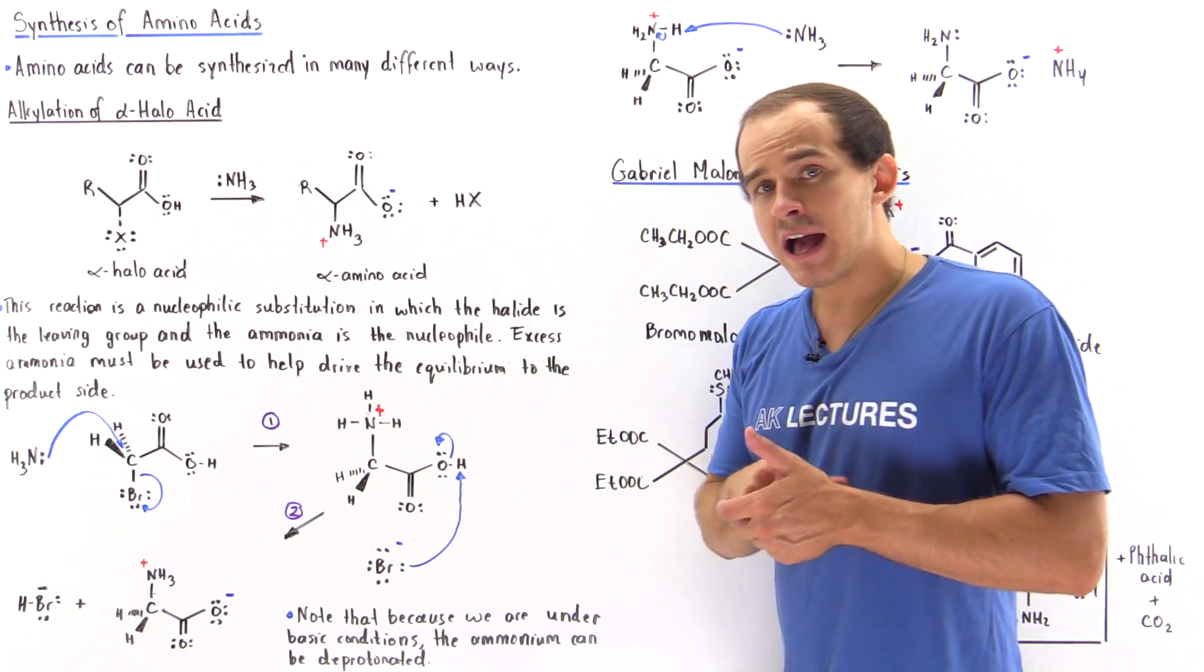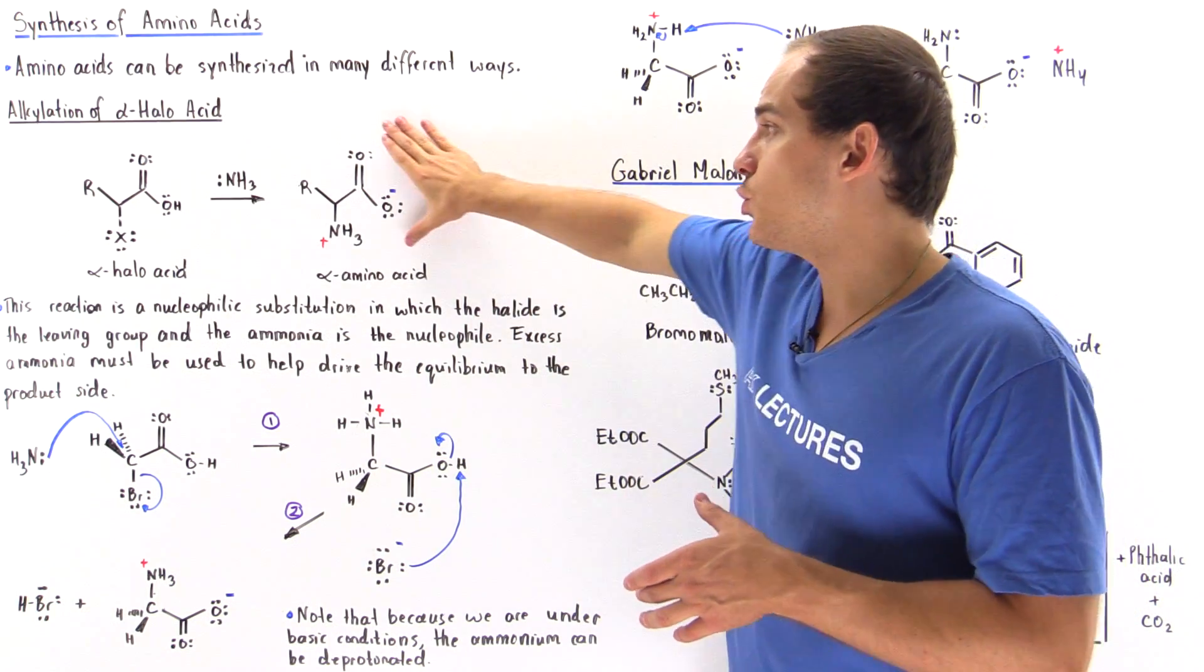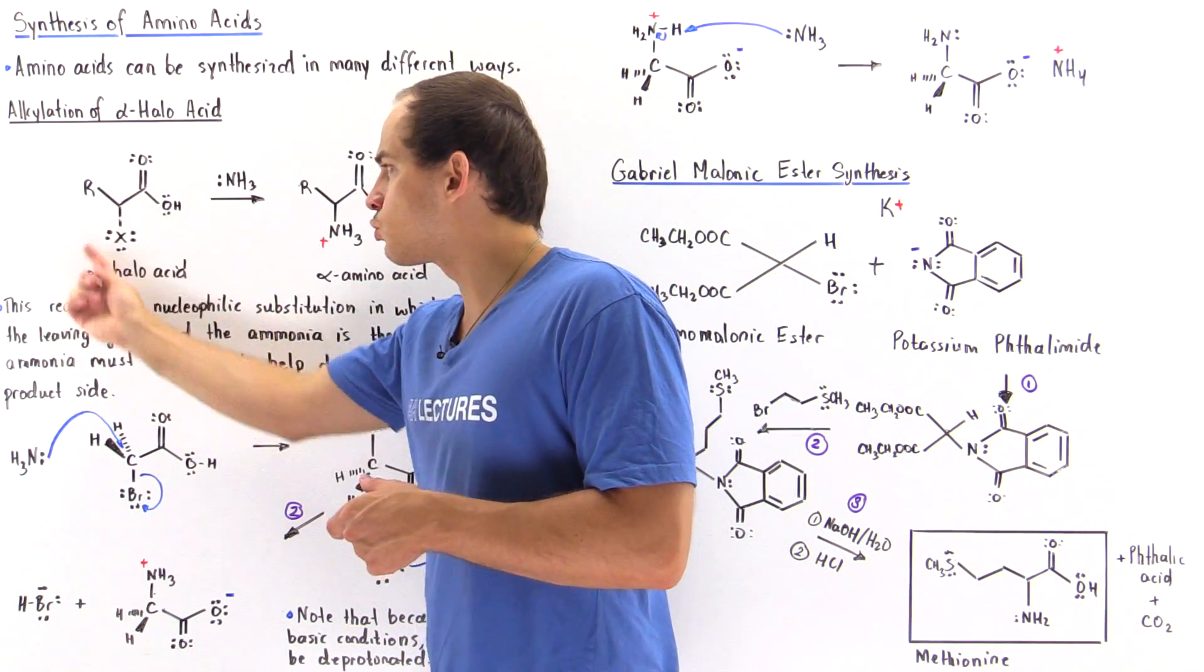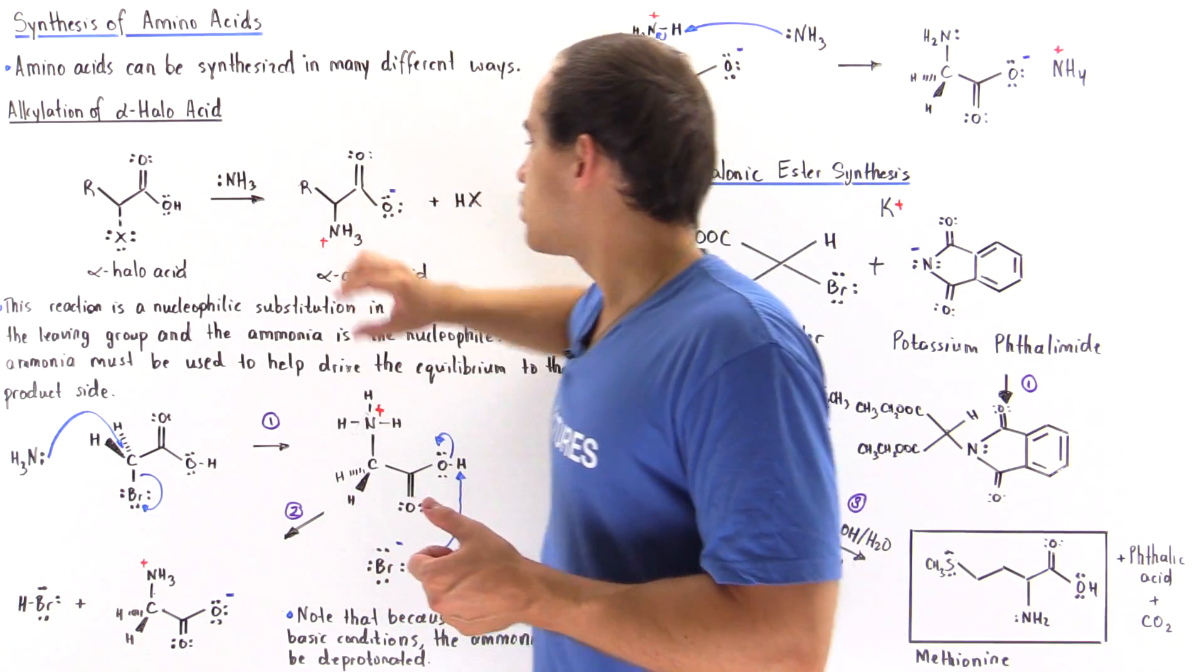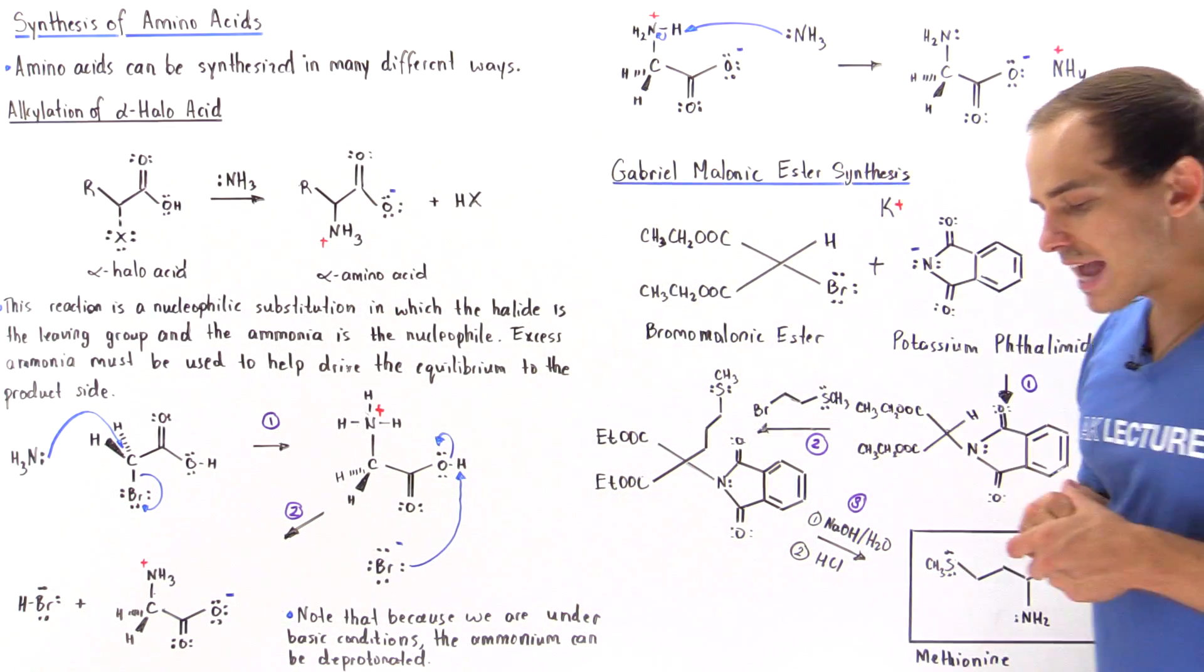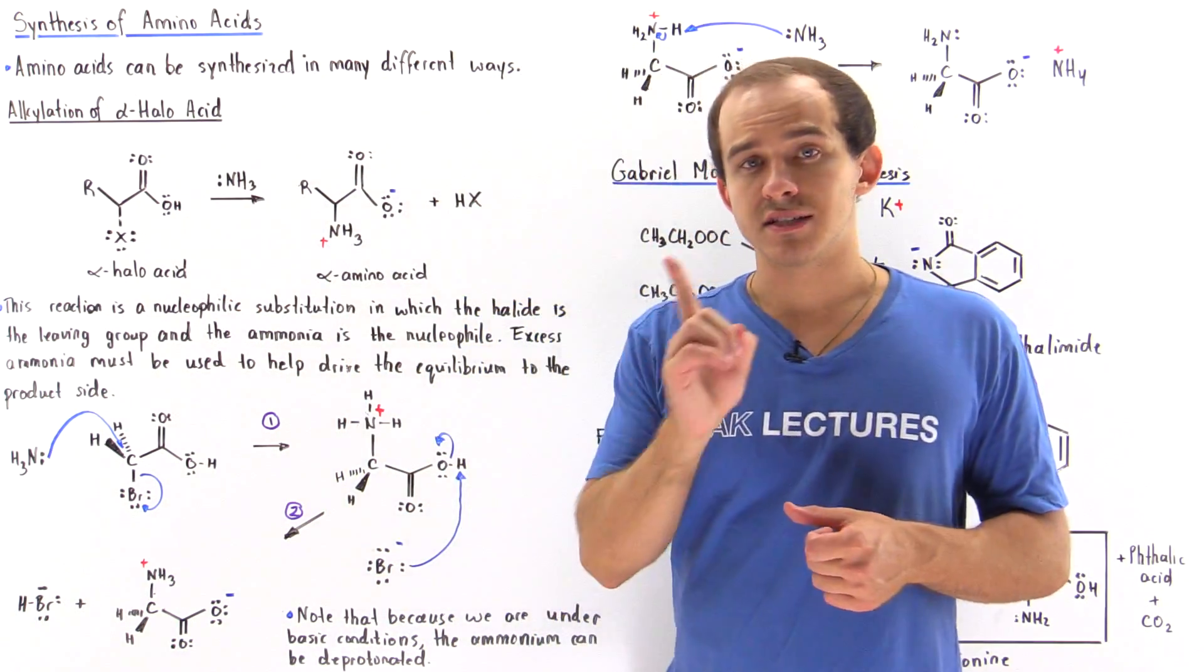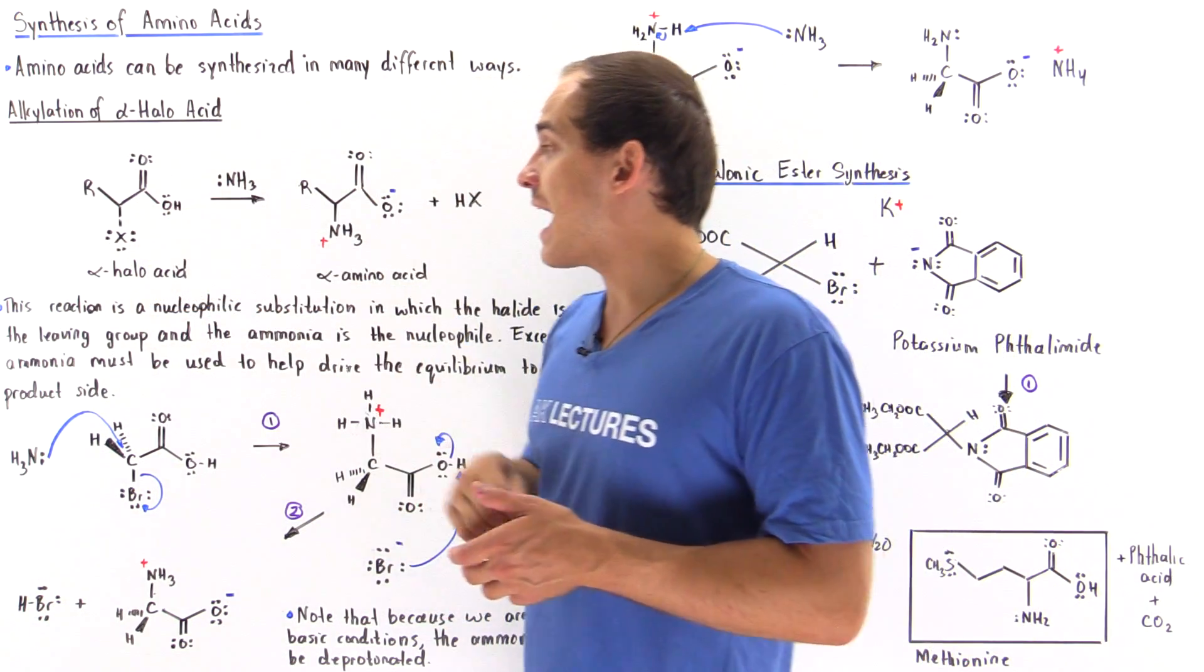Now, if we take this alpha-haloacid and we mix it in excess ammonia, we produce this molecule, the alpha-aminoacid. And notice, all we did is basically replace our halogen group, this X, with our amino group. And we also deprotonated this H and produced this carboxylate ion. Now, this reaction is an example of a nucleophilic reaction, a nucleophilic substitution in which this ammonia acts as the nucleophile replacing and displacing this halogen X.